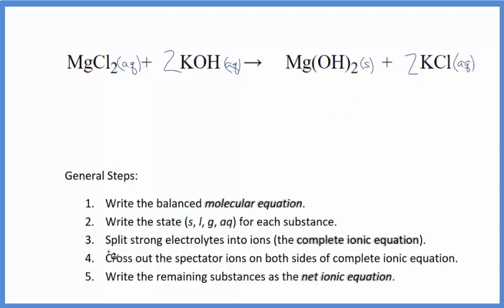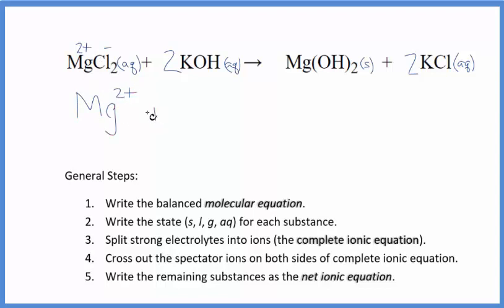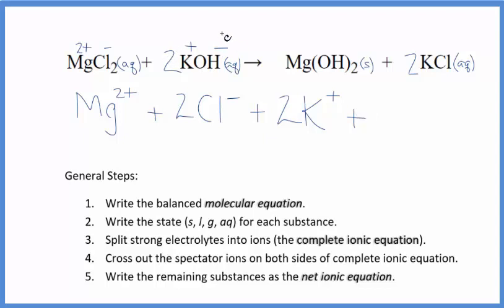Now we can split the strong electrolytes into ions for the complete ionic equation. Magnesium is in group 2 on the periodic table, so it's going to be 2+. The chloride ion is 1−. So we have the magnesium ion, Mg2+, and 2 chloride ions. For potassium, that's in group 1 — it has a 1+ charge. And then the hydroxide, the whole thing is 1−. So we have 2 potassium ions and 2 hydroxide ions.